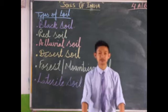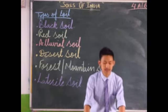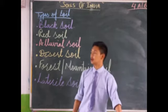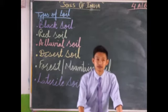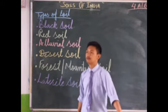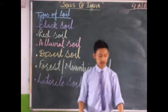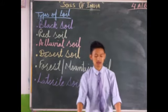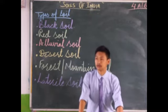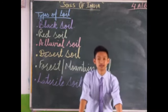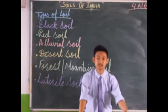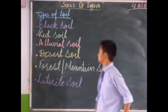This type of soil is found in Tamil Nadu, Karnataka, Maharashtra, and parts of Andhra Pradesh, Telangana, Odisha, Madhya Pradesh, Jharkhand, Chhattisgarh, Assam, and even our neighboring state West Bengal. So between these places we find red soil.